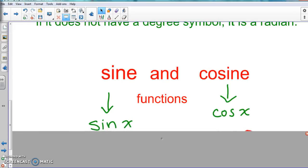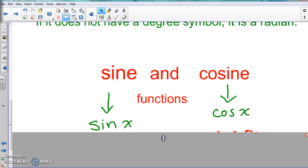So cosine looks like that and sine looks like that. S-I-N-X is sine and cosine is C-O-S-X. Or it could be theta or something like that.